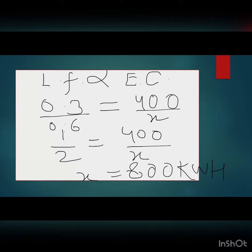We call it X in kilowatt hours. The second equation is 0.6 proportional to X. We can divide these equations. 0.3 upon 0.6 equals 400 upon X. This simplifies to 1 by 2 equals 400 upon X. What is the value of X?